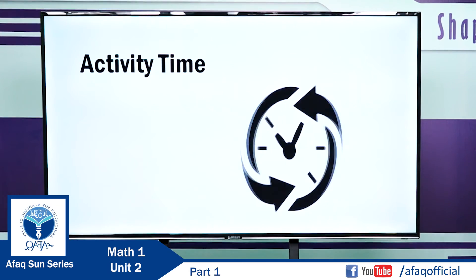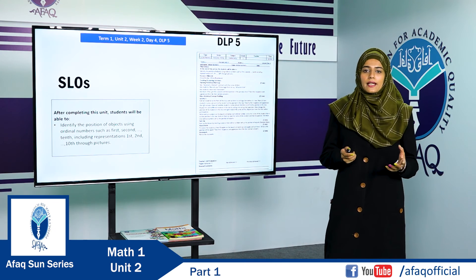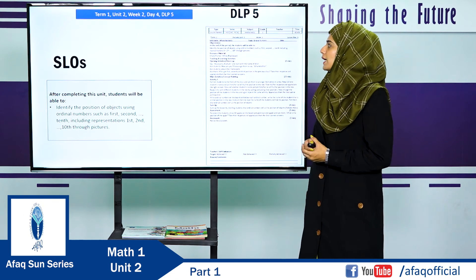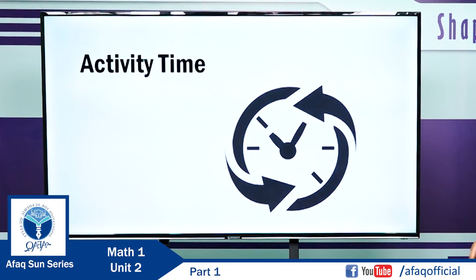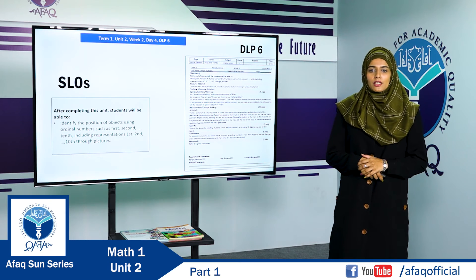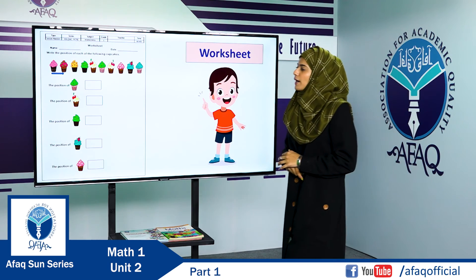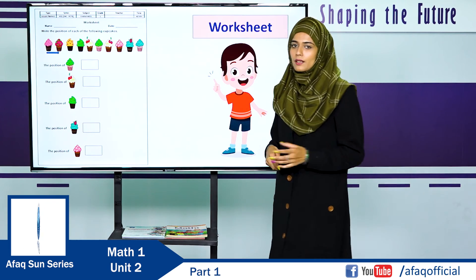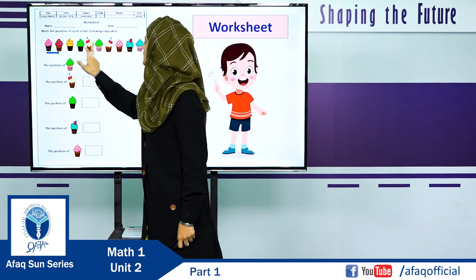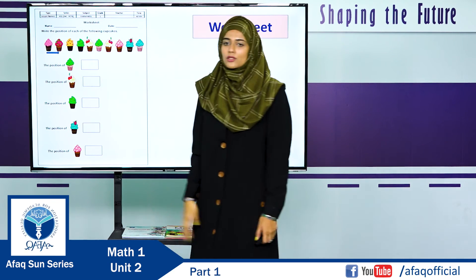In this SLO, we are going to identify the position of objects using ordinal numbers such as first, second, and third. The methodology has been provided in DLP 6, Term 1, Unit 2, Week 2, Day 4. Here is a worksheet: write the position of each cupcake. Positions are 1st, 2nd, 3rd, 4th, 5th, 6th. Identify the position of the cupcake shown — if it is at the 6th place, write 6th. Solve the rest by your own under the presence of your parents or teacher.